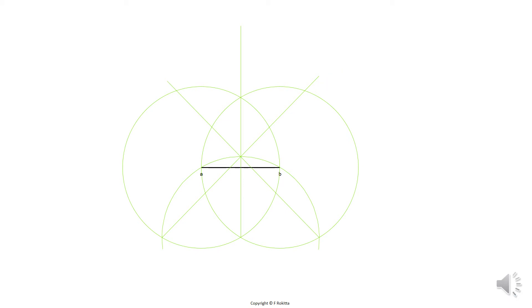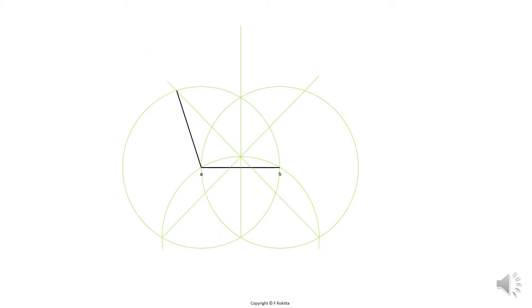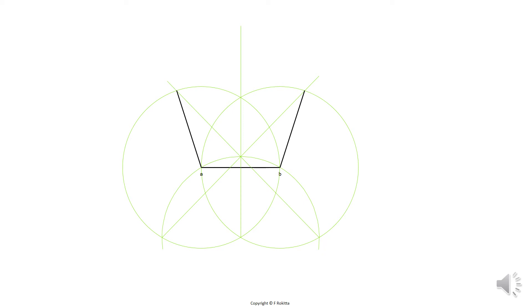Once you have completed the previous constructions, place your ruler at A and align it with the diagonal line's intersection at the top left, and draw a solid line to that intersection. Do the same on the right-hand side from point B to the diagonal line's intersection at the top right and draw a solid line. Once you've drawn these two solid lines, label them as C and E.